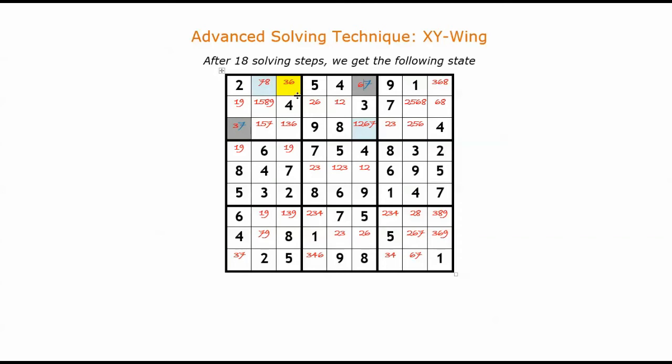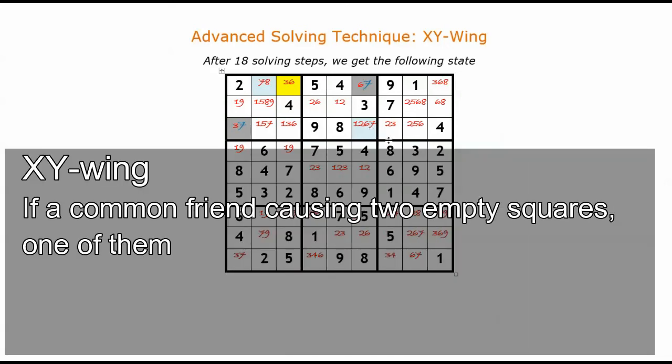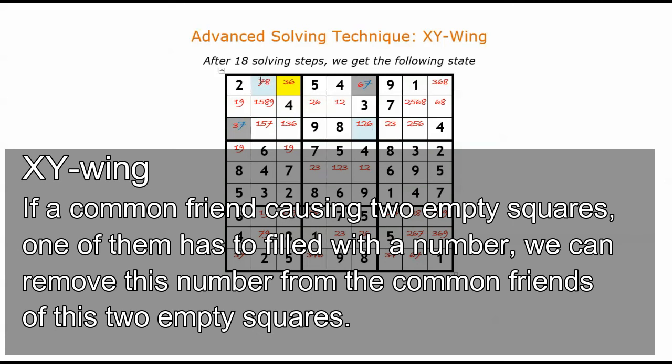You can see the blue squares are common friends of these two grey squares. Because 7 either appears in the left grey square or the right grey square, we can remove 7 from their common friends. This method is called XY-Wing. Thank you for watching.